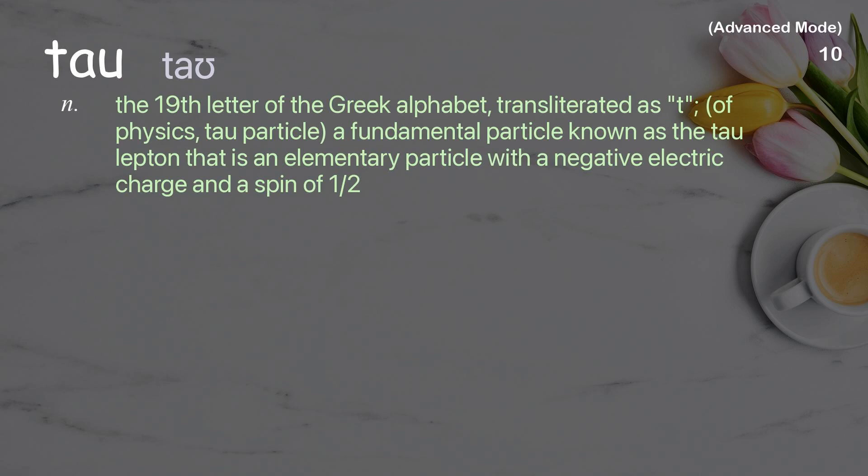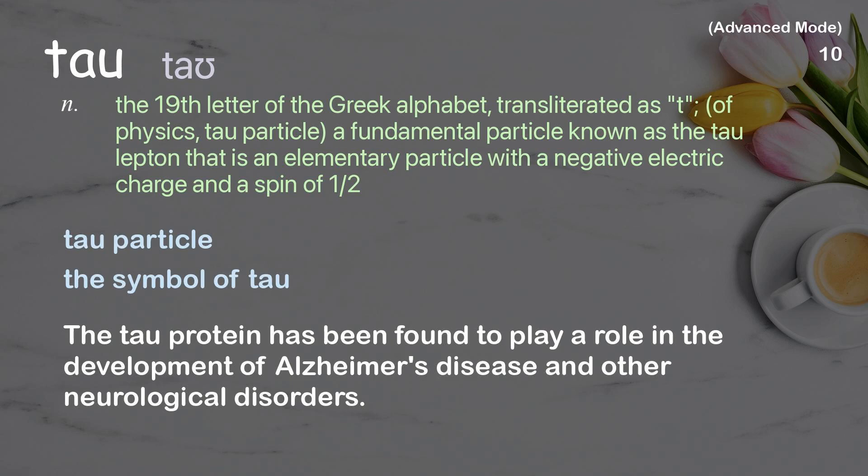Tau: The 19th letter of the Greek alphabet, transliterated as T. In physics, the tau particle is a fundamental particle known as the tau lepton — an elementary particle with a negative electric charge and a spin of one-half. Examples: tau particle, the symbol of tau. The tau protein has been found to play a role in the development of Alzheimer's disease and other neurological disorders.